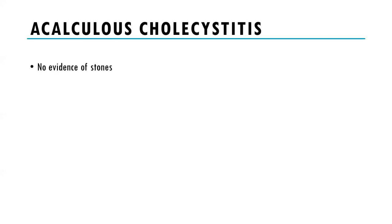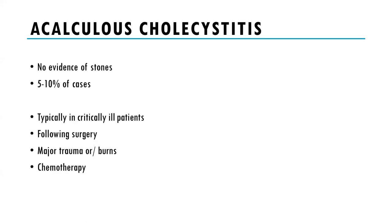Acalculous cholecystitis can happen — inflammation in the gallbladder with no evidence of stones — in roughly 5 to 10% of cases. It typically happens in critically ill, immunocompromised patients, and is commonly seen after major surgery, major trauma, burns, or chemotherapy. In the immunocompromised population it tends to have high morbidity and mortality.